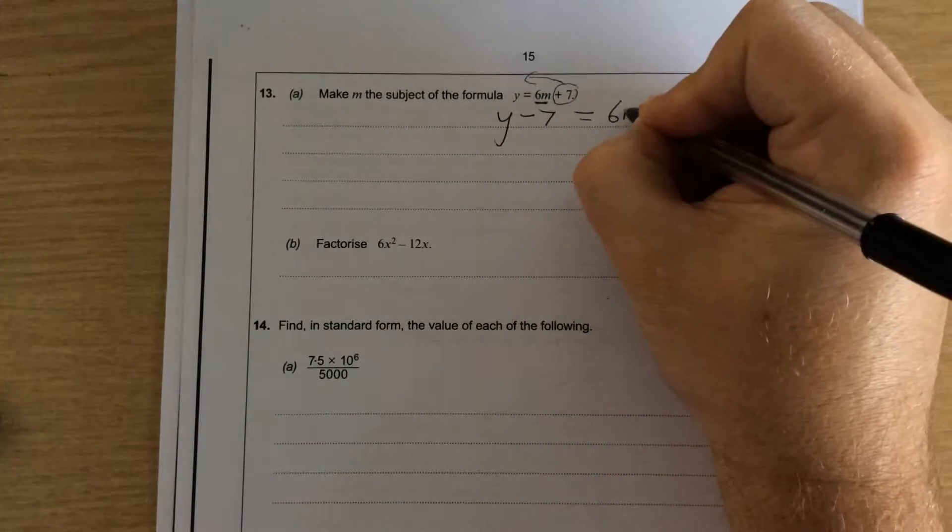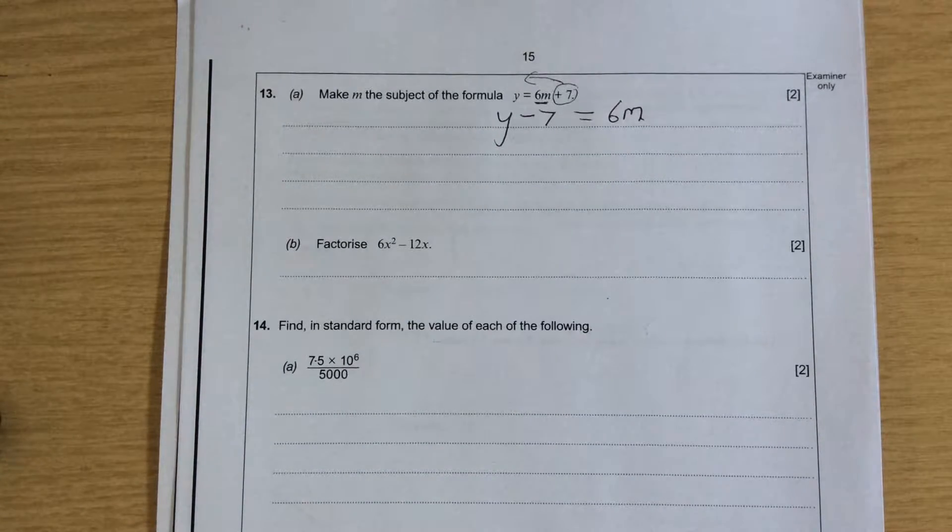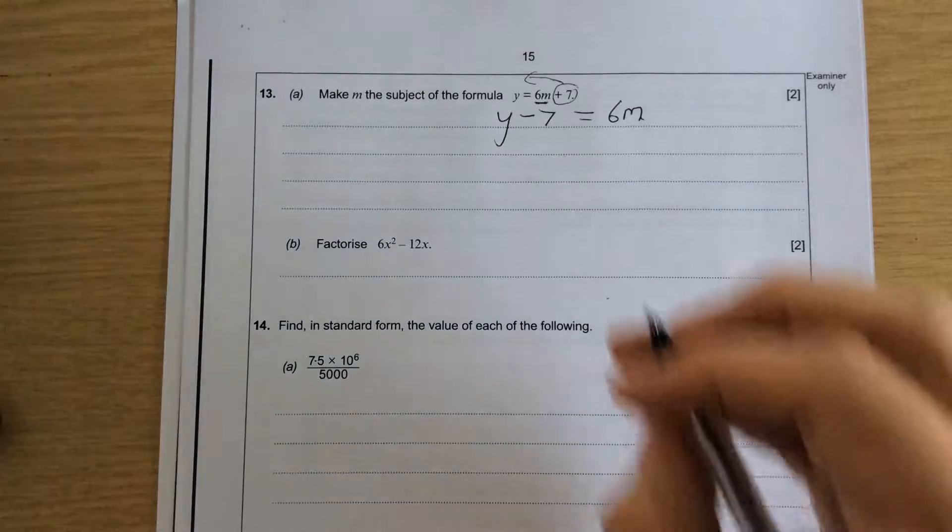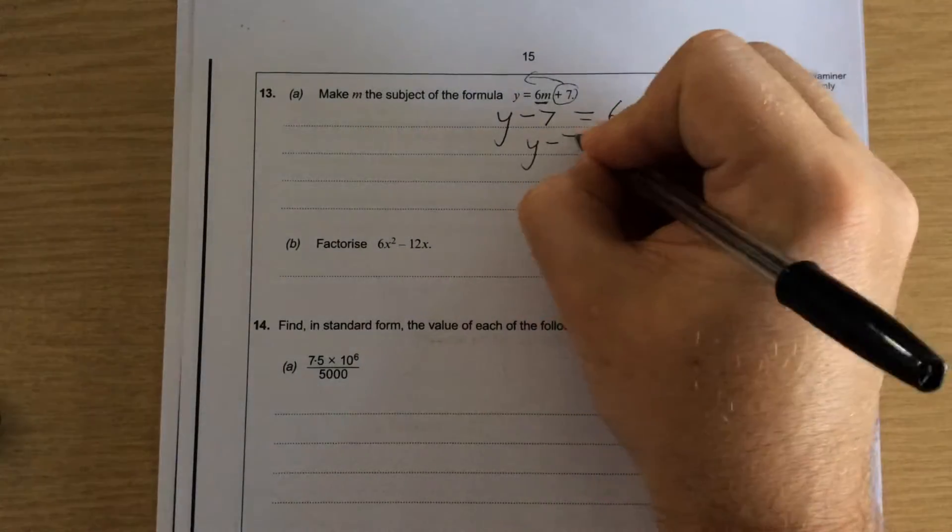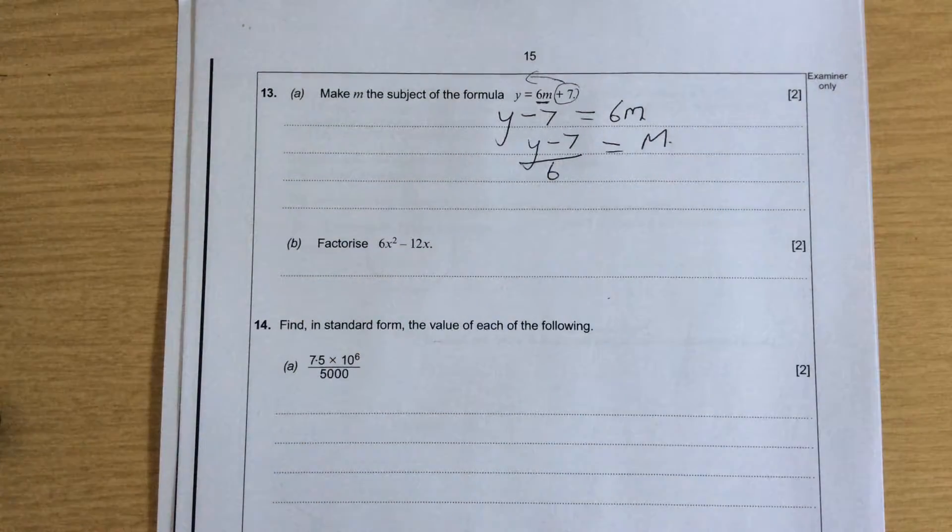So I'm left with y take away 7 is equal to 6 times m. So to get m on its own, the opposite of times 6 is divided by 6. So it becomes y minus 7 all divided by 6 is equal to m.